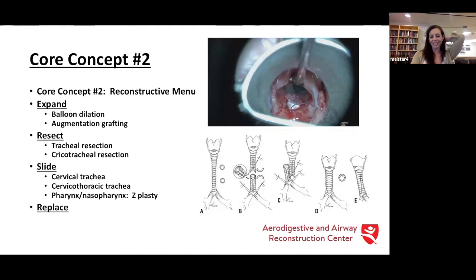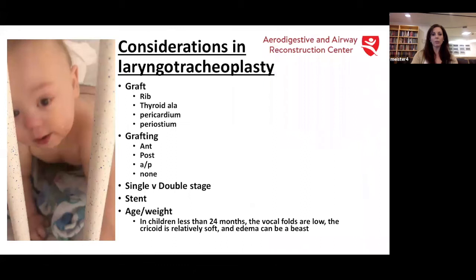The last option is replace. We're not quite at tracheal replacement or free tracheal transfer. My personal feeling is that we haven't figured out the vasculature — once we have a truly vascularized flap, that may work. The other concept under replacement is bypass — this may be an endotracheal tube, bypassing the area you're working on and giving it time to heal. So again: expand, resect, slide, or replace.